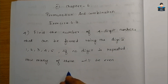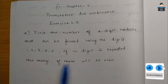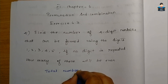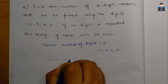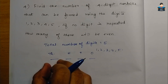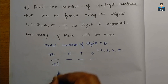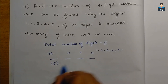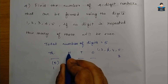So we need to form 4-digit numbers out of the 5 digits 1, 2, 3, 4, 5. We have four places: 1s, 10s, 100s, and 1000s. In the 1000s place, from the 5 digits, we can arrange in 5 ways.